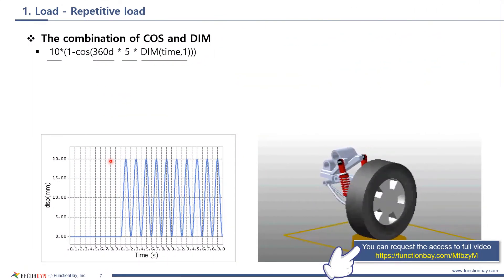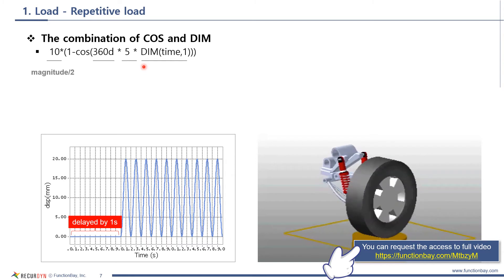You can create repetitive values by using sine or cosine. In this example, I used dim with the parameters time and 1 to express repetitive values with time delay of 1 second. 10 means half the magnitude of the pulse. This is input frequency. 360d means 1 revolution. And dim is used to begin this signal from 1 second.